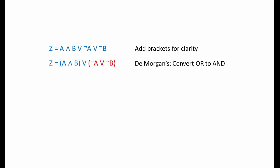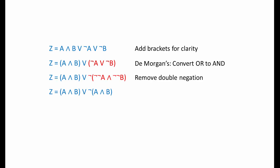Here's solution four. We're going to add some brackets for clarity first of all, just so we can see what's going on. Now I'm going to use De Morgan's to convert the OR on the right-hand side into an AND. Remove the double negation. And now I'm going to use the complement law to reduce the whole thing down to one, because the complement law says anything ORed with its negation is one. This couldn't get much simpler.